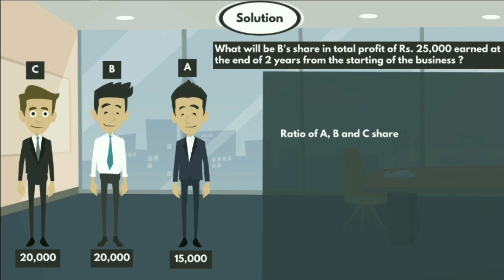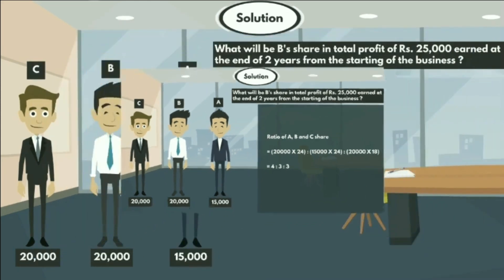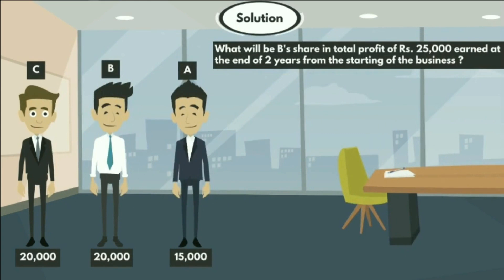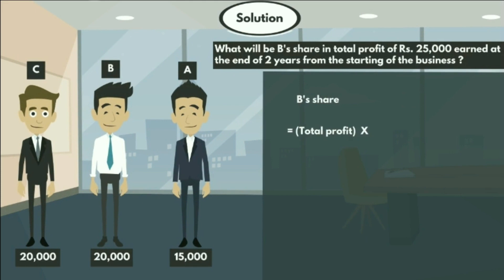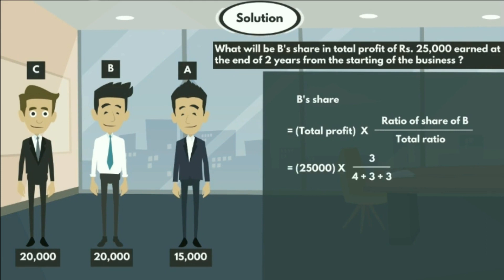At the end of two years, the ratio of A, B, and C's share is 20,000 × 24 : 15,000 × 24 : 20,000 × 18. After solving this, we get 4 : 3 : 3. B's share equals total profit × (B's ratio / total ratio) = 25,000 × 3 / (4 + 3 + 3) = 7,500 rupees.